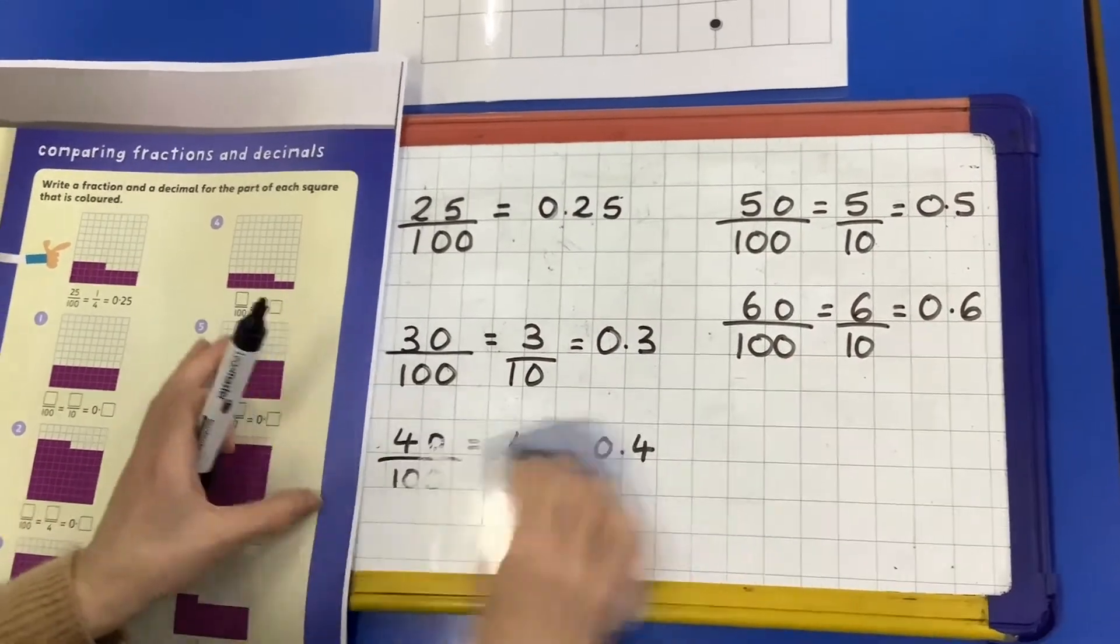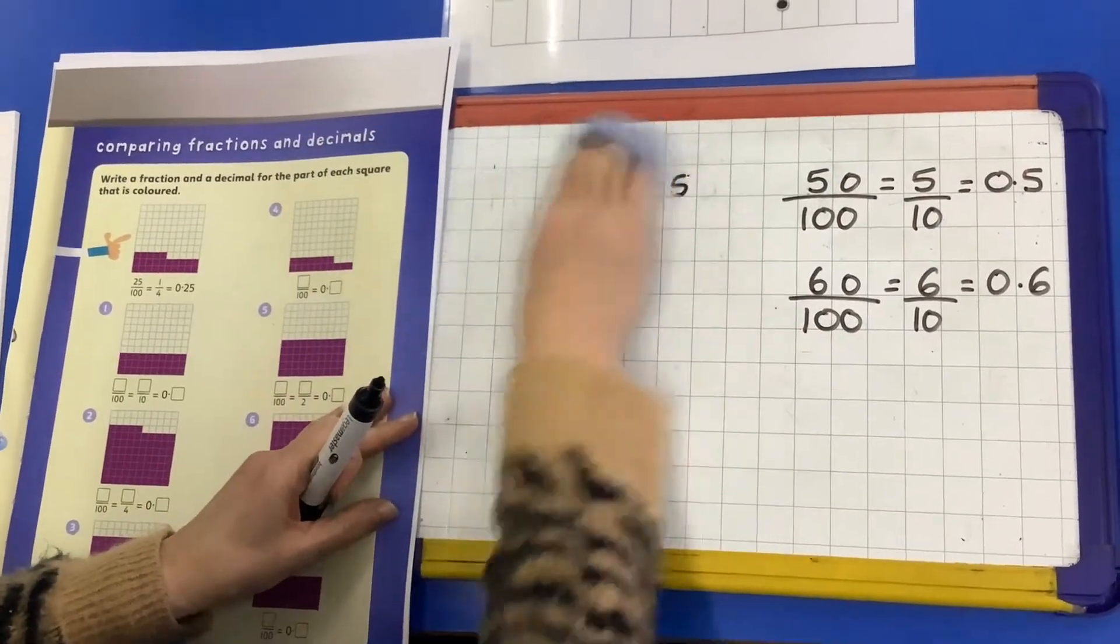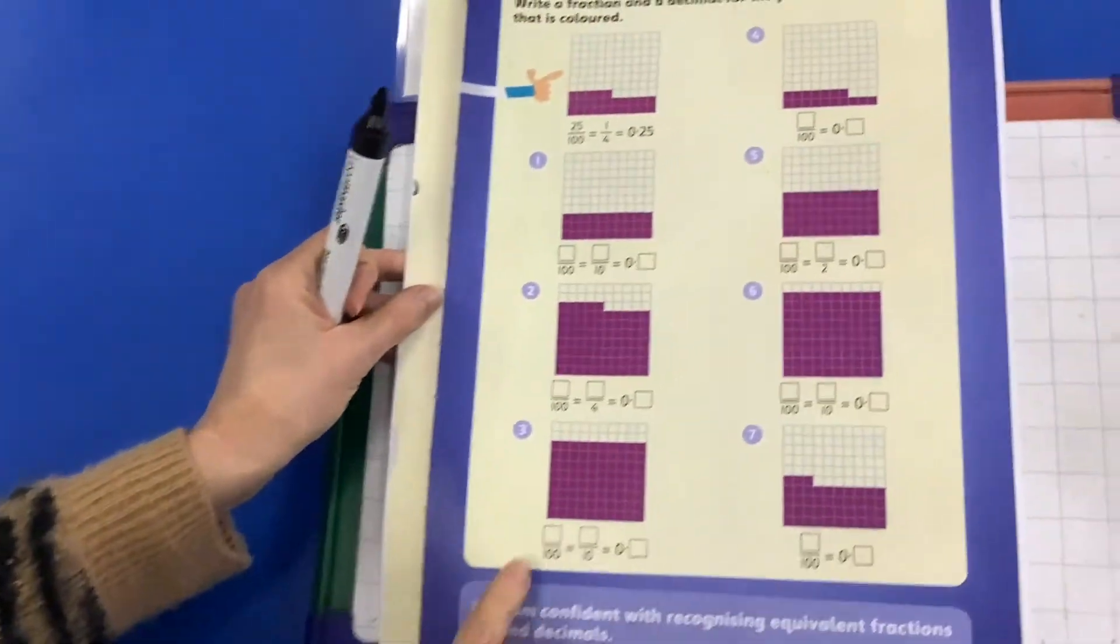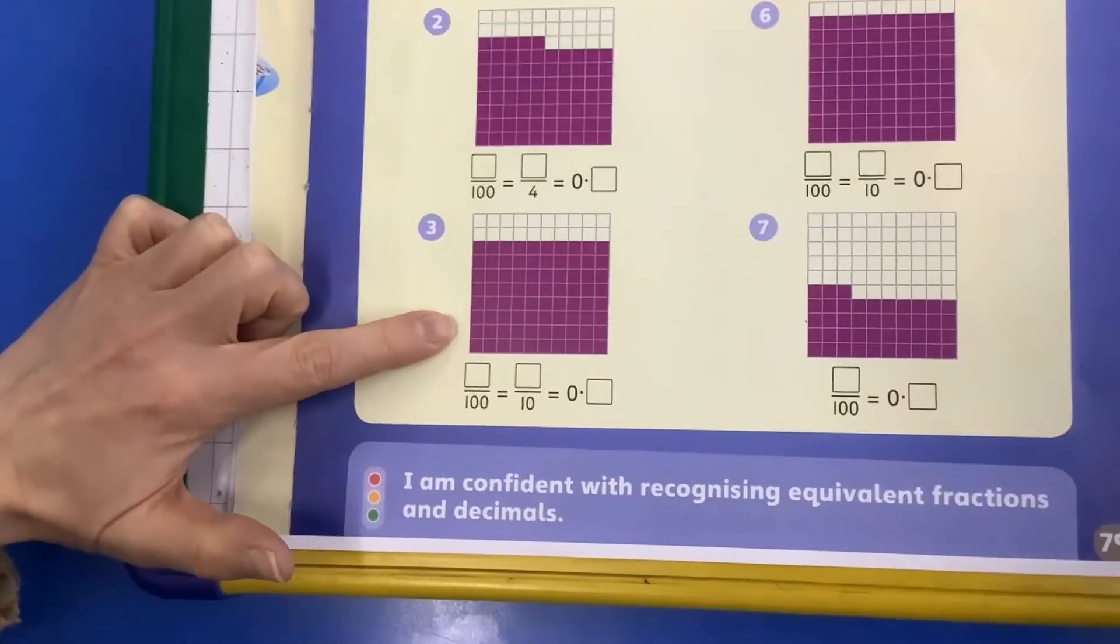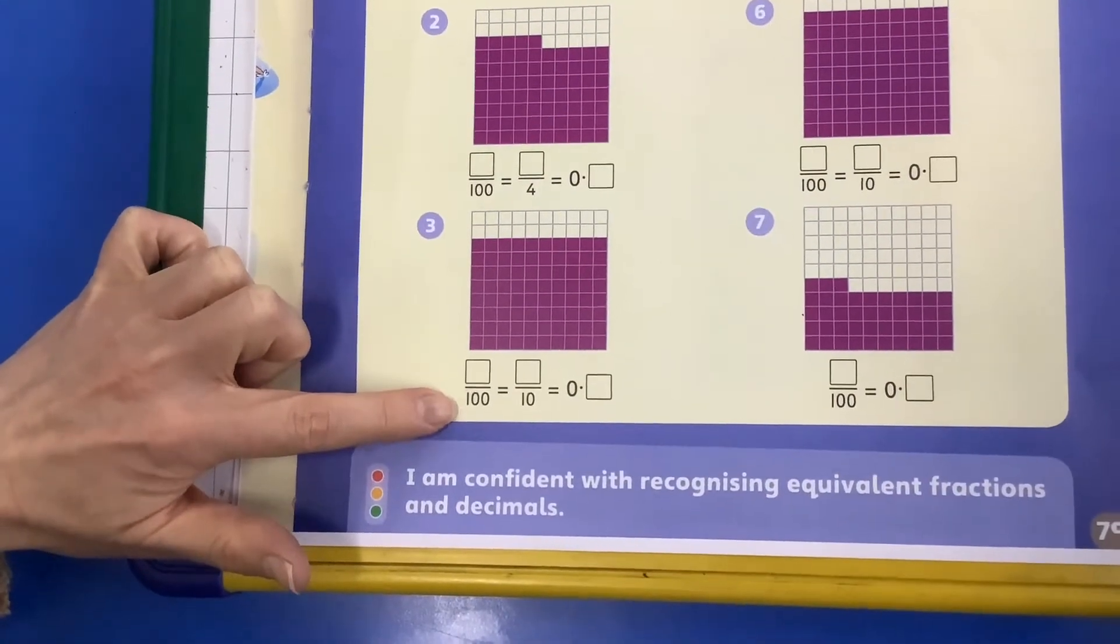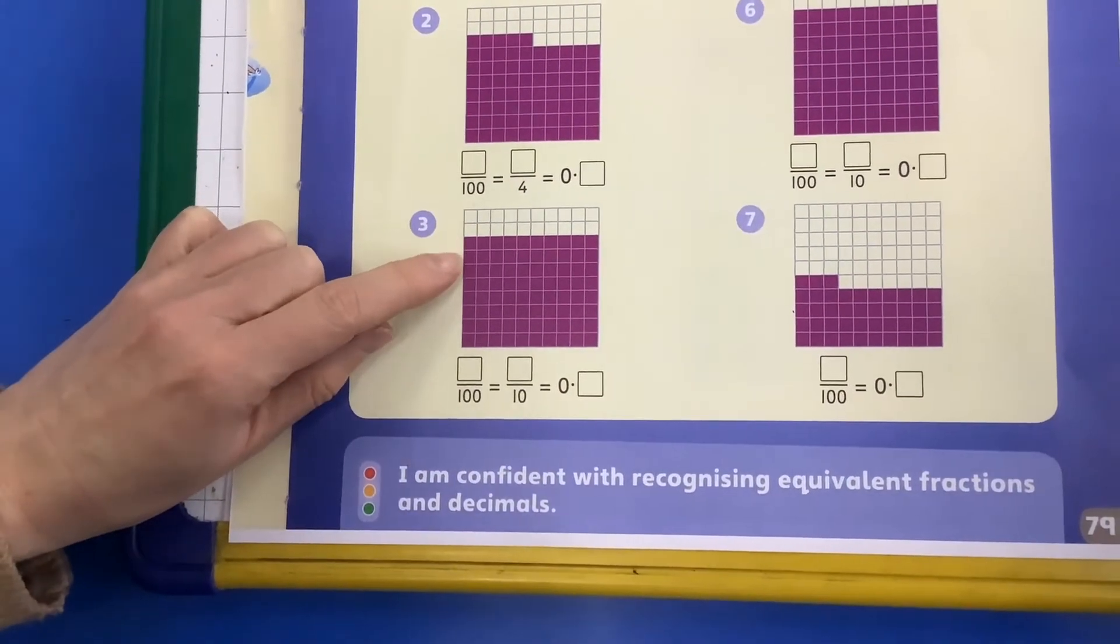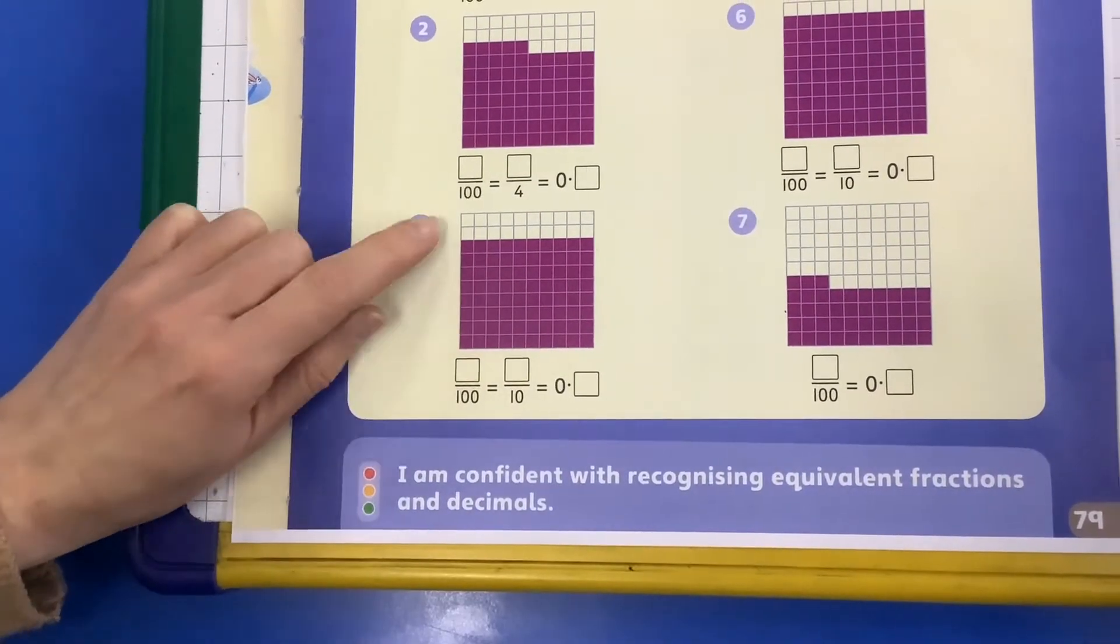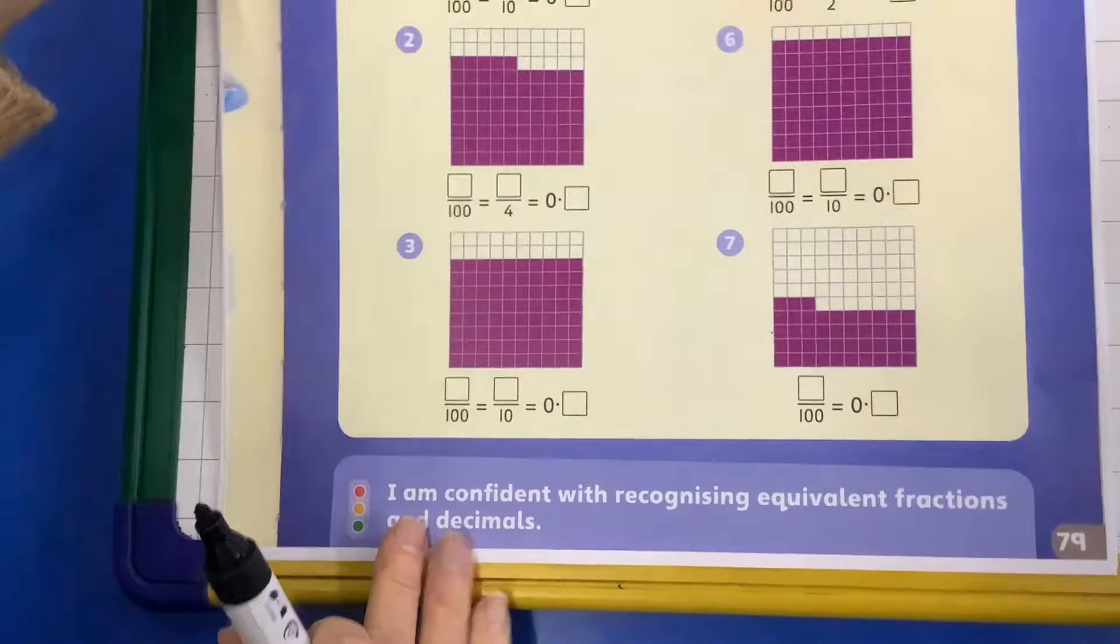Let's try another one from the sheet. So let's have a look at number 3 here. Let's see you have a look at it first. How many out of 100 are shaded here? 10, 20, 30, 40, 50, 80. And I can check because I can see that there's 20 that aren't shaded. So it's 80 out of 100.